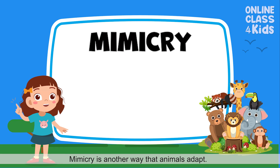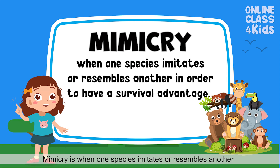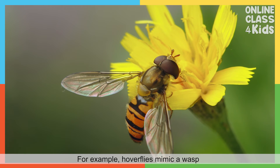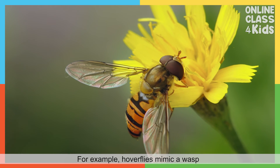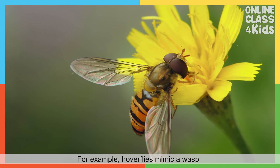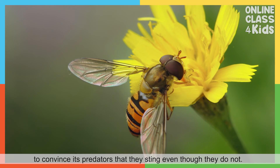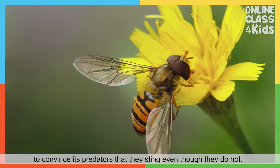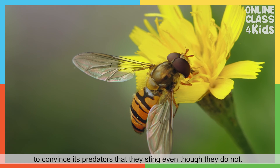Mimicry is another way that animals adapt. Mimicry is when one species imitates or resembles another to have a survival advantage. For example, hoverflies mimic a wasp to convince predators that they can sting, even though they cannot.